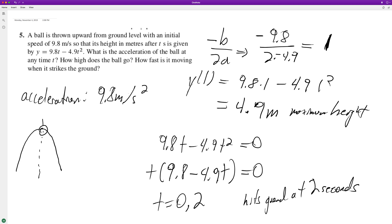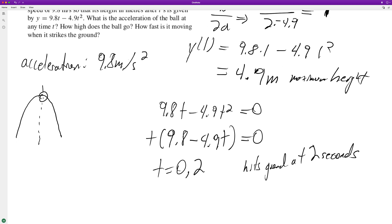And finally, how fast is it moving when it strikes the ground? To do that, we need the second derivative. So Y prime at two seconds is, and then the derivative is 9.8 minus 9.8T, so in this case two. And when we plug that in, 9.8 minus 17.6 should give us negative 9.8. Negative 9.8 meters a second because velocity is directional as a vector unit. So negative, it's heading towards the earth.